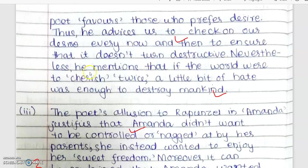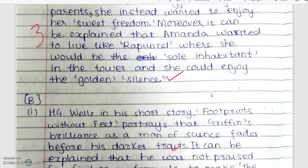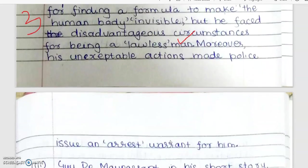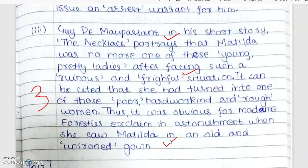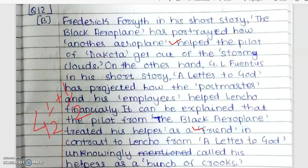Transitional words are used and this is a very, very well written literature section — you can take a lot home from here. However, in the poet's allusion to Rapunzel in Amanda, the poet's name is not mentioned — you can give some suggestion there. The name, title, and strong verb are present in the next answer, and citations are in the evaluative form. The student has used the technique very well, and it is only through practice that you develop this very naturally.